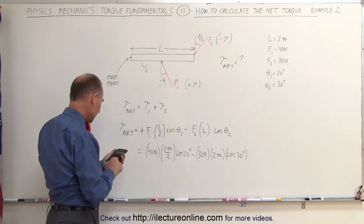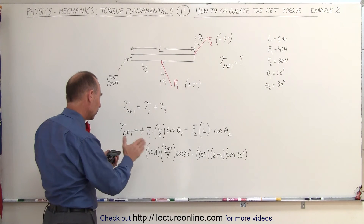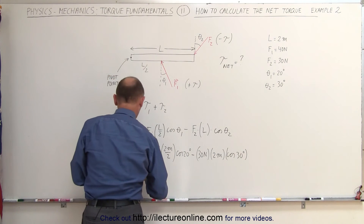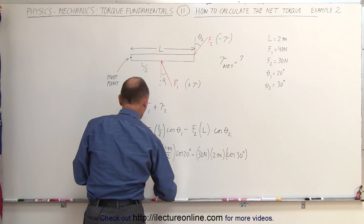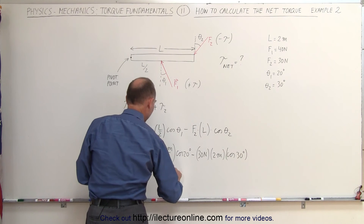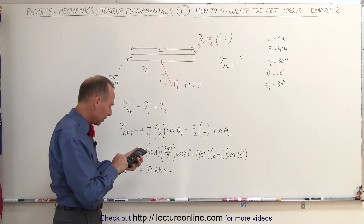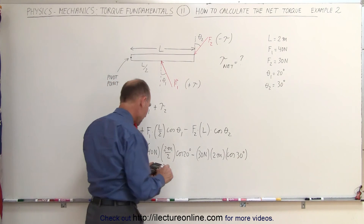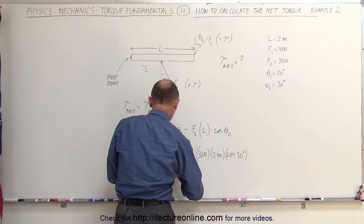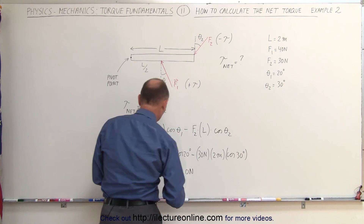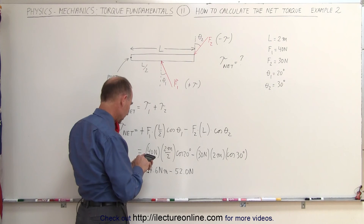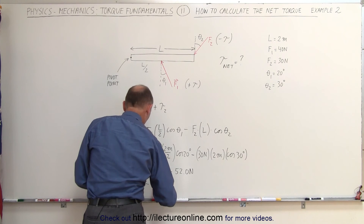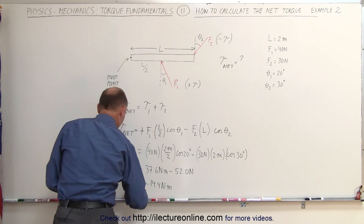The cosine of 20 is 0.94, and we multiply it times 40 to get 37.6 newton meters, which is positive. Minus: the cosine of 30 times 60 gives us 52.0 newton meters. So 52.0 minus 37.6 gives us a negative 14.4 newton meters, which is the net torque.